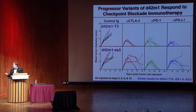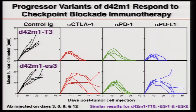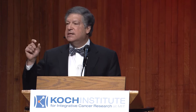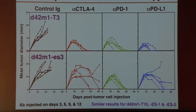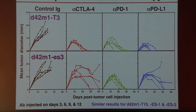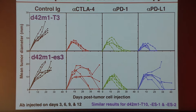We decided to ask this question in the context of checkpoint blockade. We went back to the D42M1 T3 clone that lacks mutant spectrin beta 2 and the D42M1 ES3 escape tumor that also lacks mutant spectrin beta 2. As I've shown you, when you inject these variants into naive syngeneic wild-type mice, they grow progressively — they look just like an edited wild-type tumor. However, if you begin growing these and after three or four days you start to treat these mice therapeutically with anti-CTLA-4, anti-PD-1, or anti-PD-L1, you induce the rejection of these tumors in all or most all of the cases.